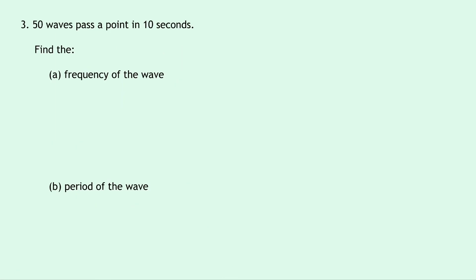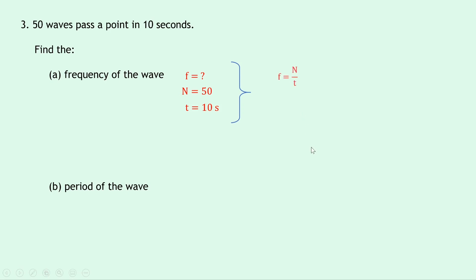The last question, question 3, says that 50 waves pass a point in 10 seconds. Find A, the frequency of the wave, and B, the period of the wave, just like we've done before. For part A, the frequency of the wave — writing down what we know, F equals question mark, N equals 50 and the time is 10 seconds. Writing down our relationship F equals N over T, substituting in the numbers gives 50 divided by 10, which gives an answer of 5 hertz.